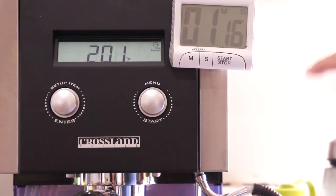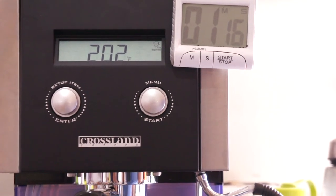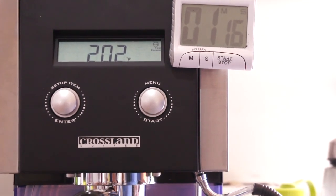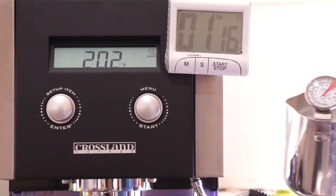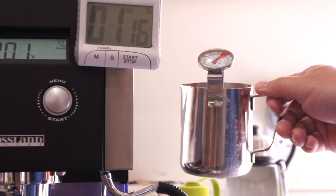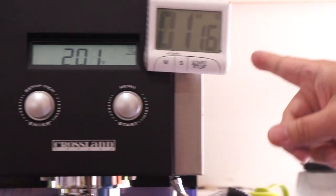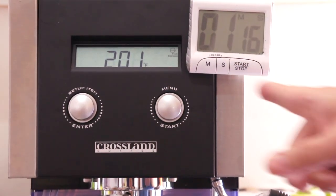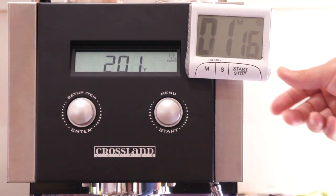So, again, we could cycle this and go back to steam and back and forth. But I think we have about a fifty-second time, from forty to one forty degrees Fahrenheit, of five ounces of one percent low-fat milk. And about a minute to a minute and a half going back from steam to our brew temperature. Or about a minute and sixteen seconds.